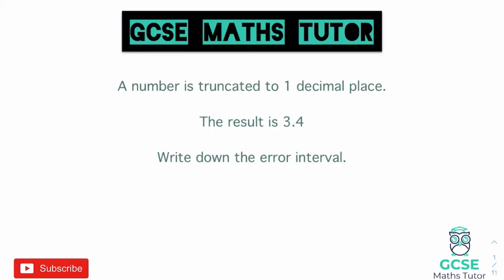So when we're looking at writing down an error interval for this, we need to think about the lowest and the highest possible number it could have been. We're still going to write our error interval exactly the same as normal — we'll put the letter X in the middle, with our two arrows pointing to the left, and an equal-to symbol on the left inequality. We're trying to find what number goes on the left and what number goes on the right — in other words, the highest and the lowest it could have been. Let's start with thinking about the lowest.